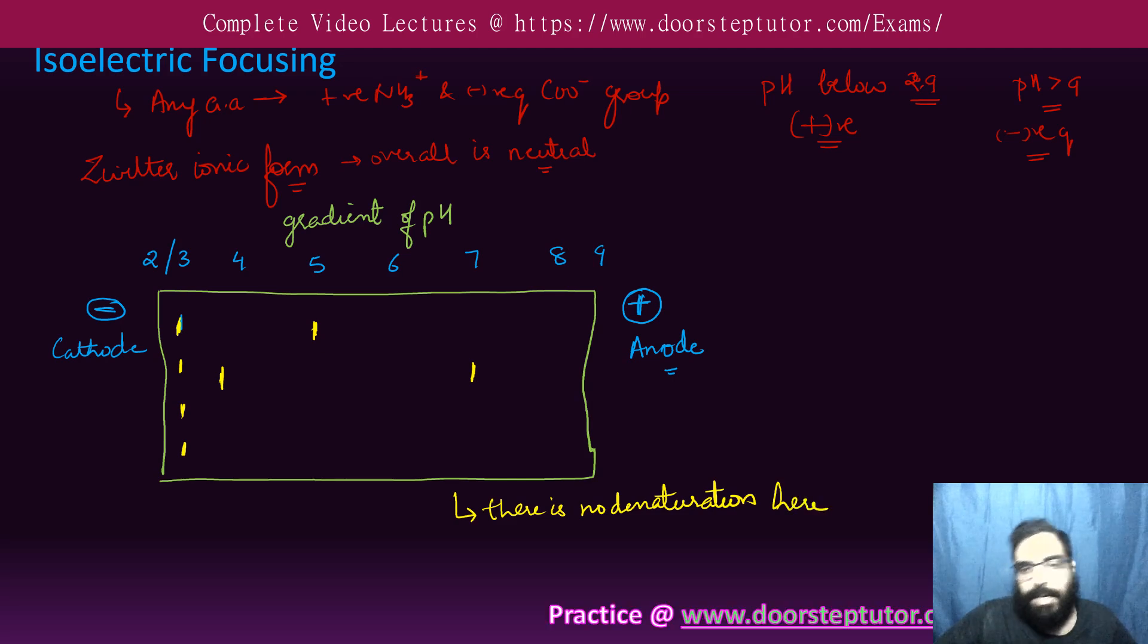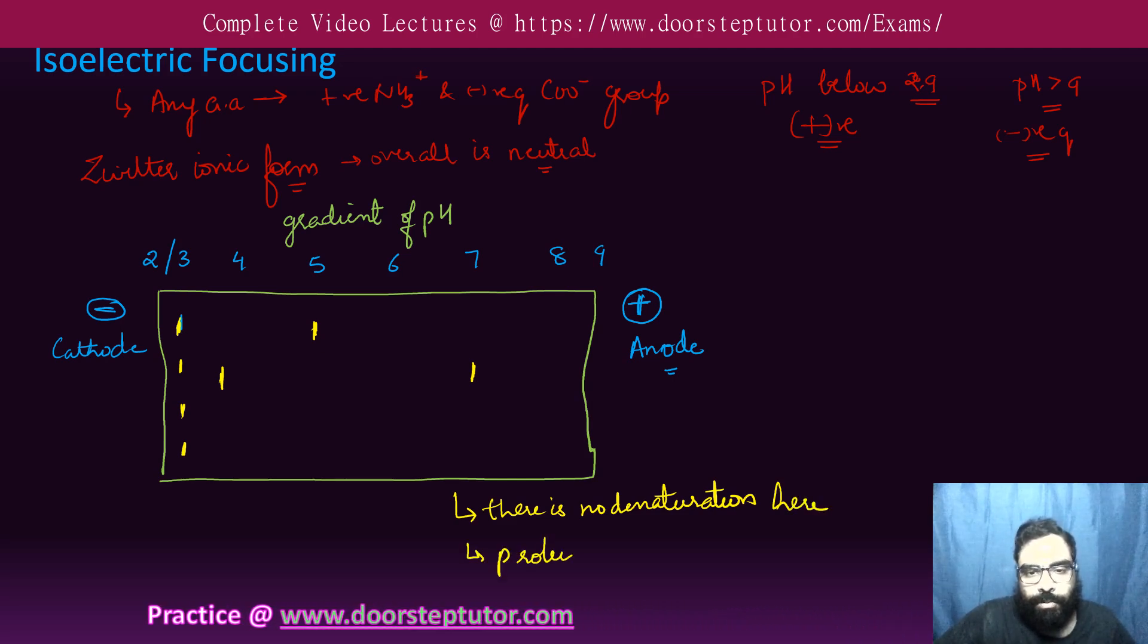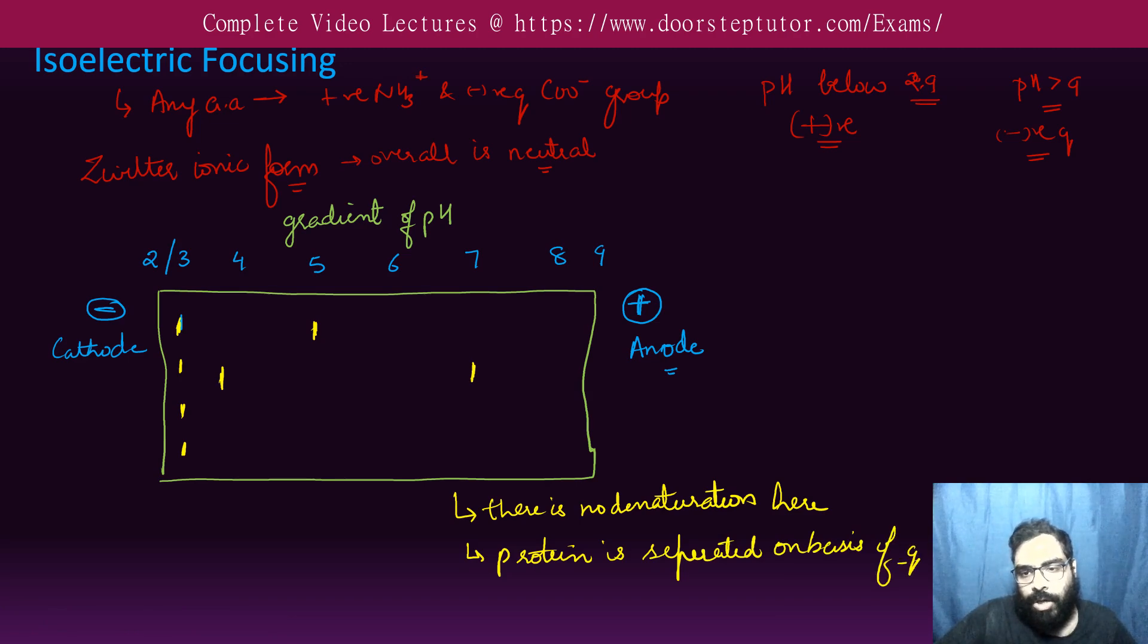And here the protein is separated on the basis of charge. Protein is separated on basis of charge. Yes, exactly. The mass will play a role but not that much. The main is the charge. And as soon as the charge becomes neutral, and that is on the pH.